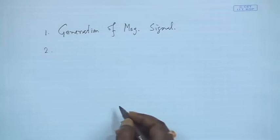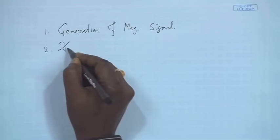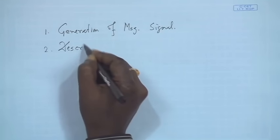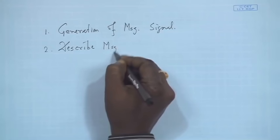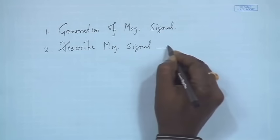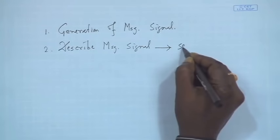For example, taking voice communication or video communication — broadcasting videos and all those things — whatever you do, first you generate the message signal. Like now I am communicating and talking, that is the message signal and it contains some amount of information inside it.